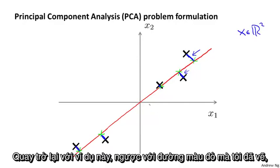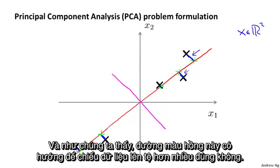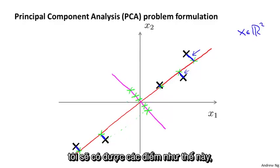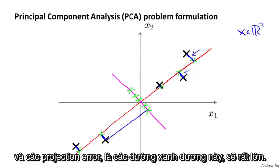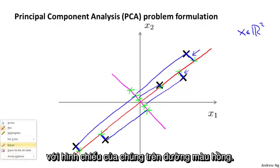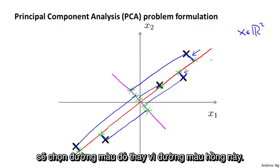Coming back to this example, in contrast to the red line I just drew, here's a different line onto which I could project my data — the magenta line. This magenta line is a much worse direction onto which to project my data. If I were to project my data onto the magenta line, the projection errors — these blue line segments — would be huge. These points have to move a huge distance in order to get projected onto the magenta line. That's why PCA would choose something like the red line rather than the magenta line.